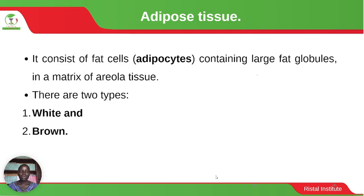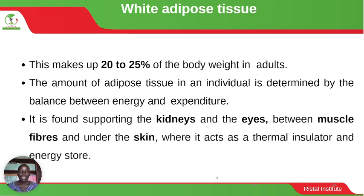The adipose tissue consists of fat cells, or adipocytes, containing large fat globules in a matrix of areolar tissue. There are two types: white and brown. The white adipose tissue makes up 20 to 25 percent of body weight in adults, and the amount is determined by the balance between energy intake and expenditure.